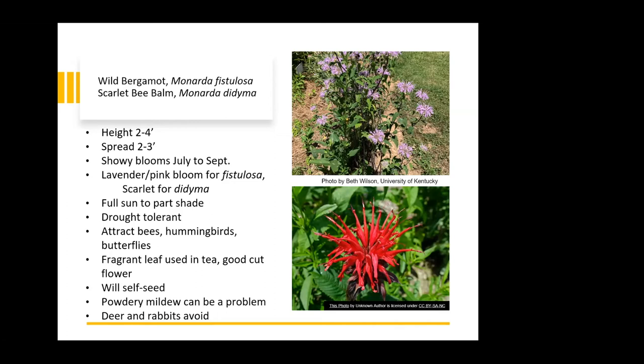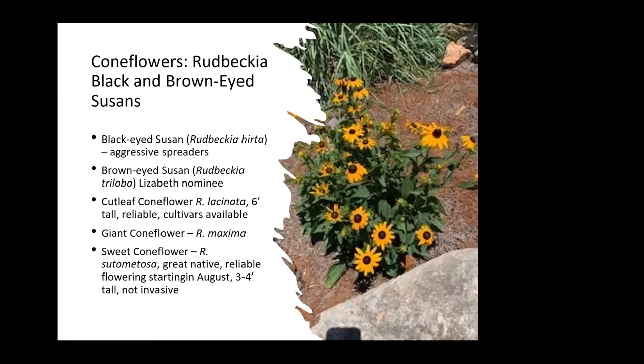This is brown-eyed Susan, which actually happens to be the Kentucky state flower. It's been a very good performer in my garden. It does re-bloom if you take the time to deadhead it, and it is a late-blooming coneflower, mostly in mid to late August and early September. Some people feel brown-eyed Susan is somewhat less aggressive and easier to deal with in the garden than black-eyed Susan.